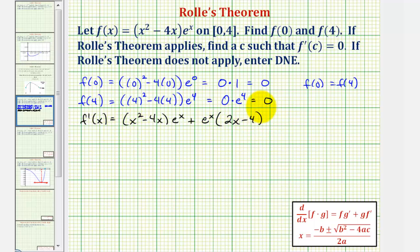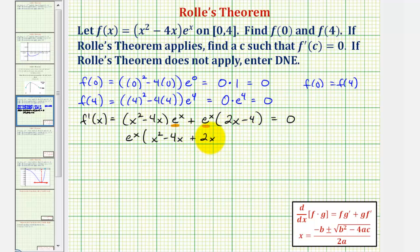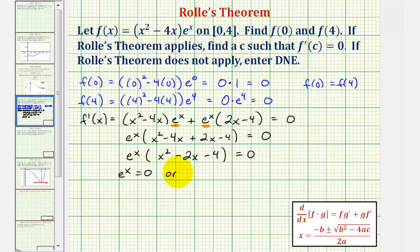We want to determine for which values of x this first derivative equals zero. Our value of c must be in the open interval from zero to four. Notice how these two products have a common factor of e to the x, so let's factor that out. We'd have e to the x times the quantity x squared minus four x plus two x minus four. Combining like terms gives e to the x times the quantity x squared minus two x minus four equals zero. This product equals zero when e to the x equals zero, or when x squared minus two x minus four equals zero.